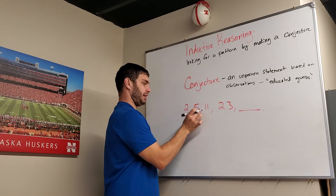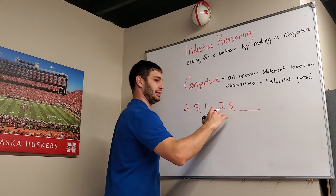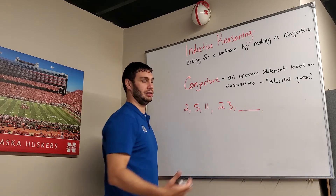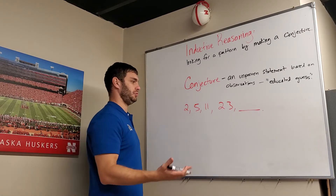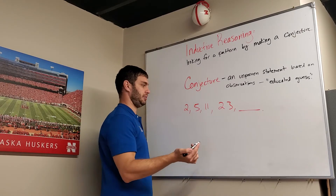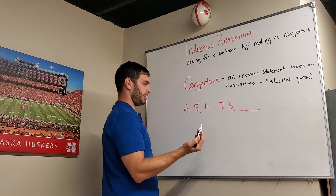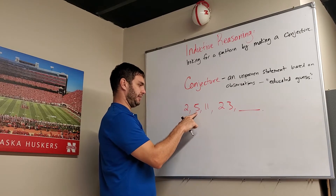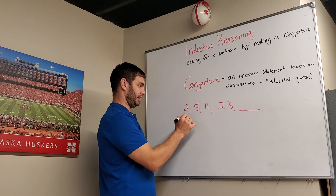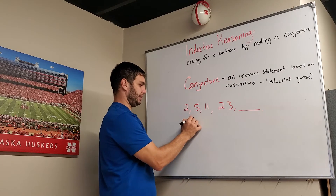We can do that using this problem here. It says 2, 5, 11, 23 — then what? So what's the next term in this sequence? How did we get there? From 2 to 5, we went up 3, or we added 3.